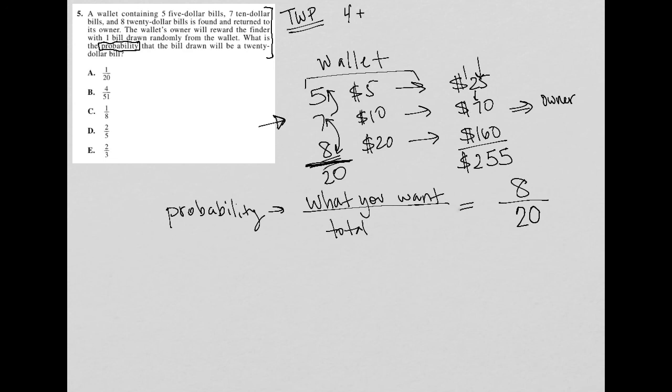Now, eight divided by 20 can be reduced. So I can reduce this by four. So four, I can divide by four, basically top and bottom. Eight divided by four is two. Twenty divided by four is five. And therefore, the probability of choosing a twenty dollar bill is two fifths. And the answer is choice D.